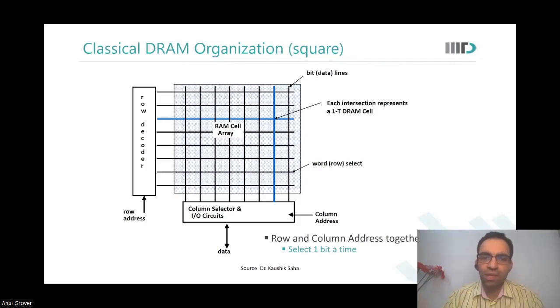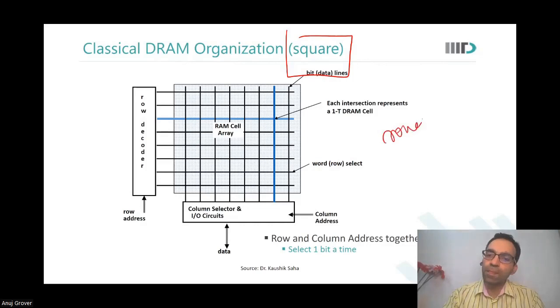Except there is one difference that it is always a square. The number of rows is equal to number of columns in a DRAM.